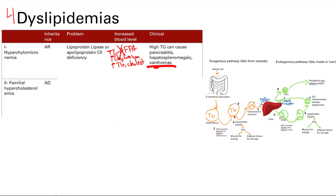The next one is called familial hypercholesterolemia. This is autosomal dominant. The problem here is an absent or defective LDL receptor, or a defective ApoB100 protein, which is needed for LDL to bind to its receptor. So for both of these defects, you basically knock out LDL receptor function — either you don't have the receptor itself or you lack the ApoB100 protein needed to bind it.